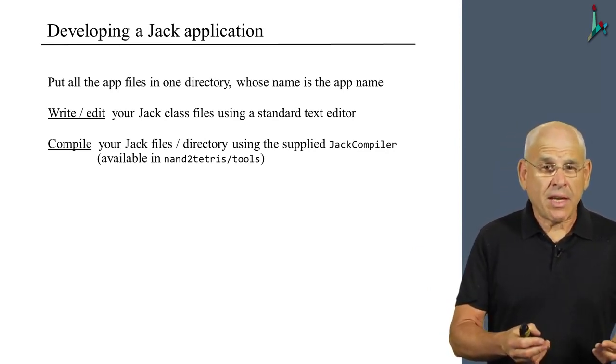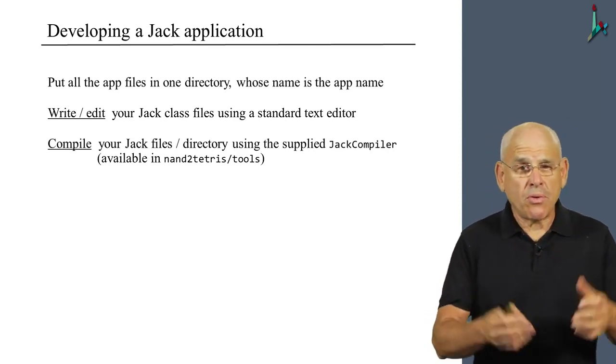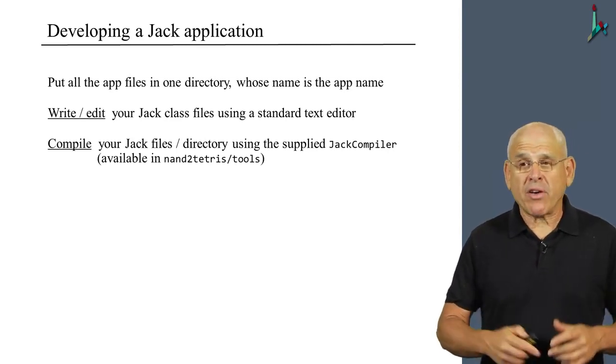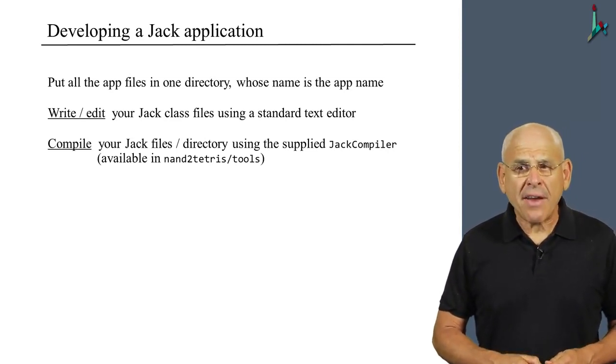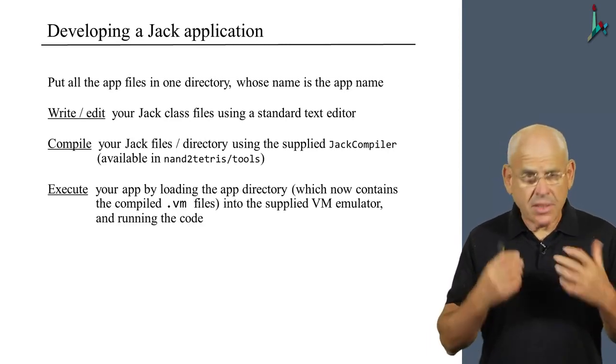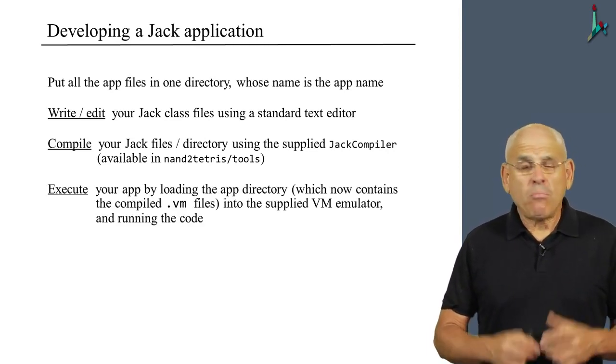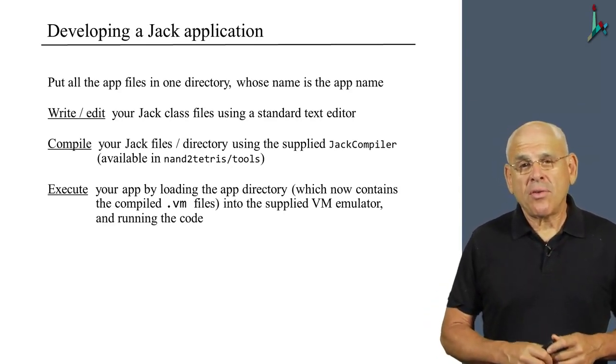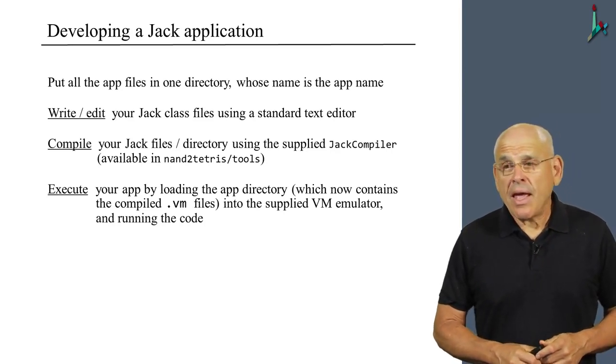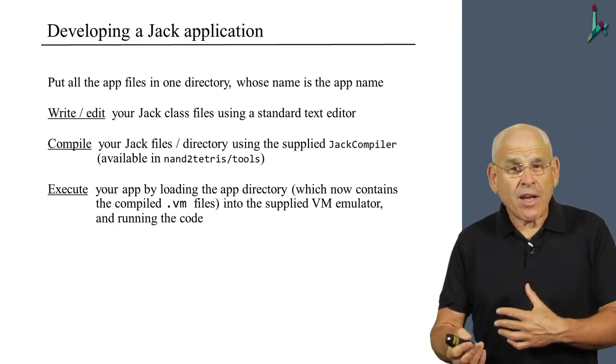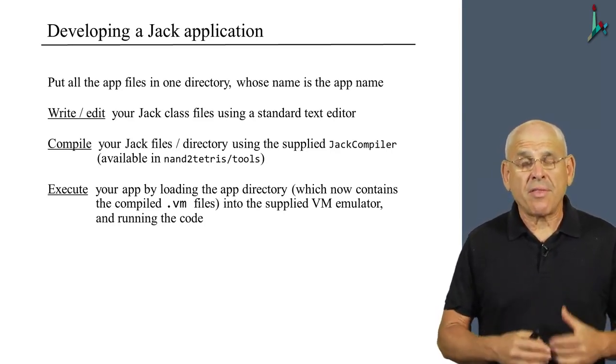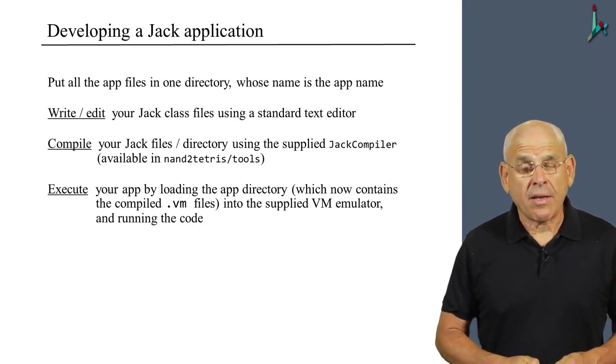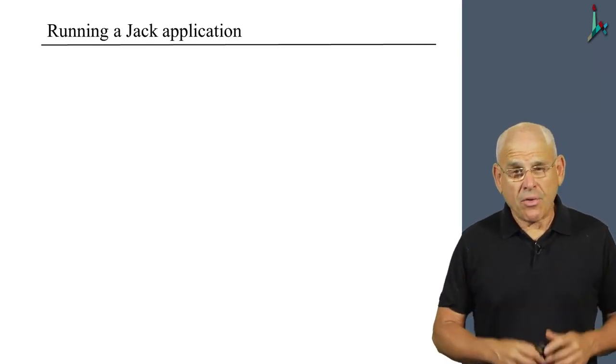So for each one of these Jack files, the compiler will produce the corresponding VM file, which is the compiled version of the Jack file. And then you can execute your program in several different ways. The most natural approach is to simply load the entire directory into the VM emulator. The emulator will ignore the Jack files, load the VM code into the emulator's environment, and then you can go on and run your program.